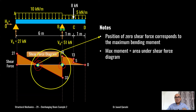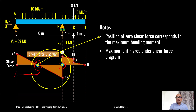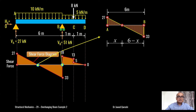Our job is to find the position of this zero-shear point. Alternatively, the maximum moment is equal to the area under the shear force diagram. So if I have the value of this distance, I can work out the area of the triangle, and that will give me the maximum bending moment — that's the easiest way.